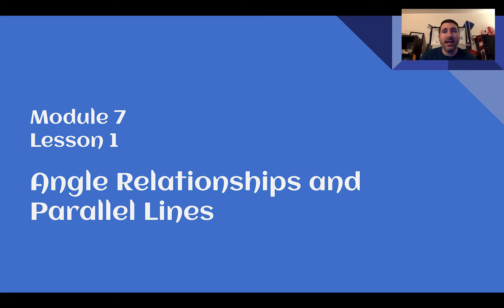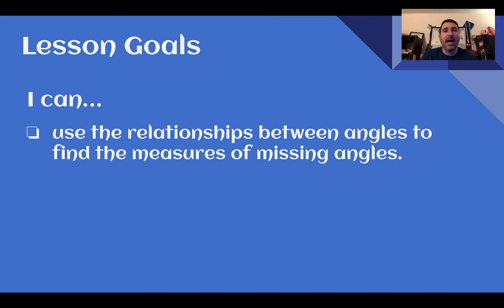Hey there, Mr. Weaver here, and this is 8th grade Module 7, Lesson 1, Angle Relationships and Parallel Lines. After this lesson, you need to be able to use the relationships between angles to find the measures of missing angles.